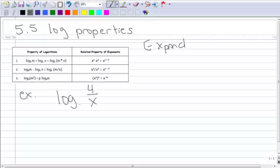Let's start with an example here. So here I have the log of 4 over x. And if there's no base written here, you assume it's 10. Well, notice how 4 is divided by x, so I'm going to use this property right here. Then I can write it as the log of 4 minus the log of x.